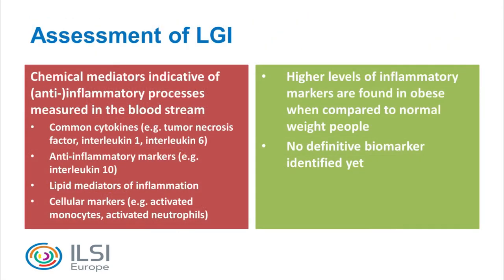The assessment of chronic low-grade inflammation is a challenge because it's not yet clear exactly which inflammatory components should be measured as the main indicator or biomarker. We know that there are a whole range of chemical mediators measurable in the bloodstream indicative of inflammatory processes. These include cytokines such as tumor necrosis factor, interleukin-1, interleukin-6, and anti-inflammatory markers like interleukin-10, as well as lipid mediators and cellular markers such as activated monocytes and activated neutrophils.